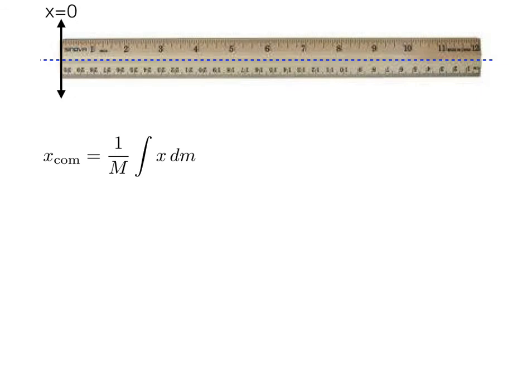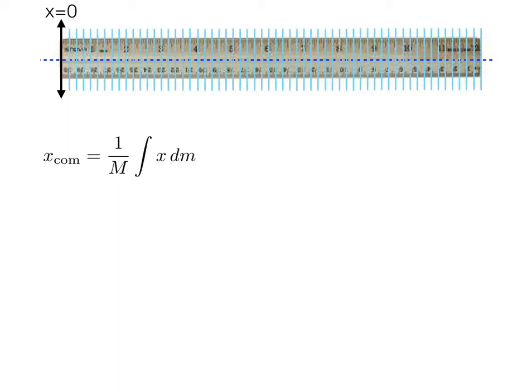So what do you think will happen if we change the origin, if we choose a different origin that's at the far left-hand side of the stick? Well, we'll start in the exact same way by dividing the stick into many little mass elements.